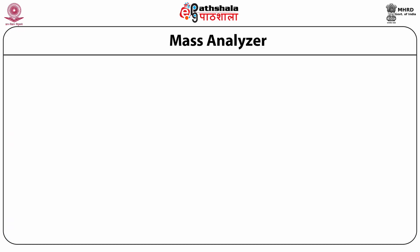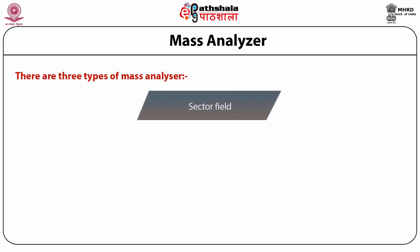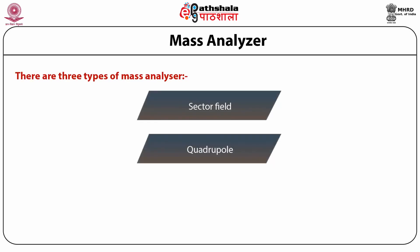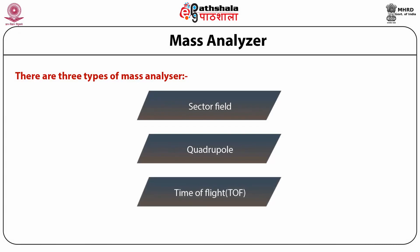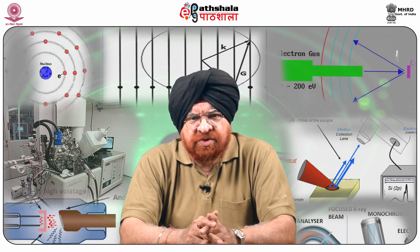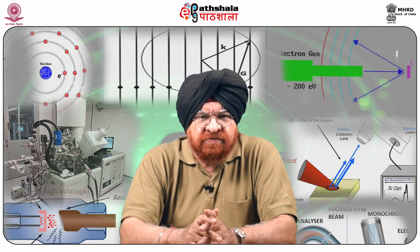The second important part of instrumentation is the Mass Analyzer. There are three types: sector field, quadrupole, and time of flight. The function of the mass analyzer is to separate ions according to the mass-to-charge ratio. It must possess high resolution and a high rate of transmission of ions.